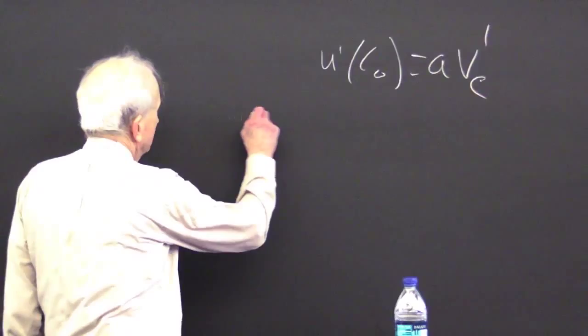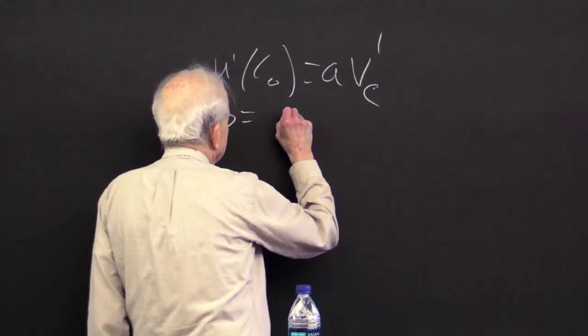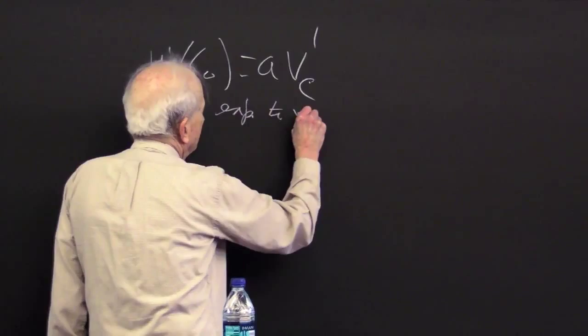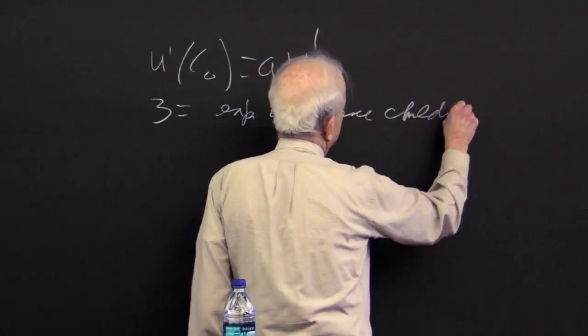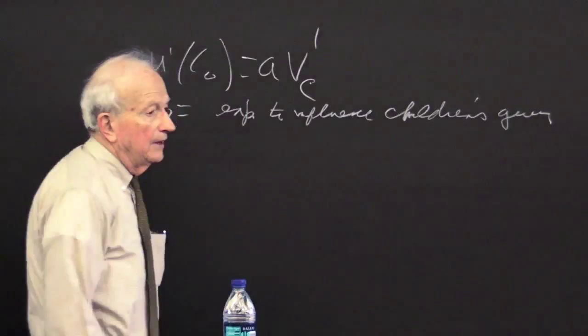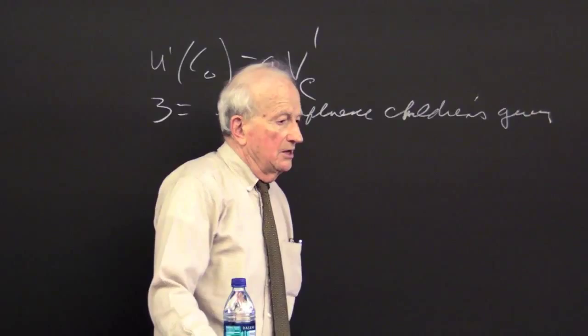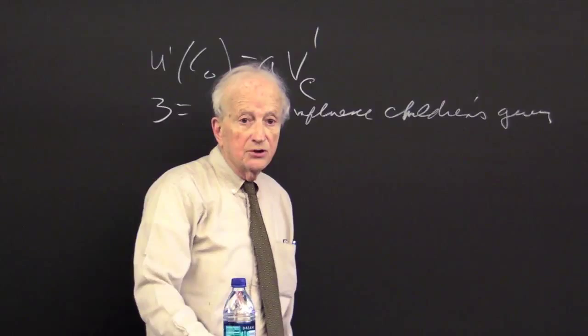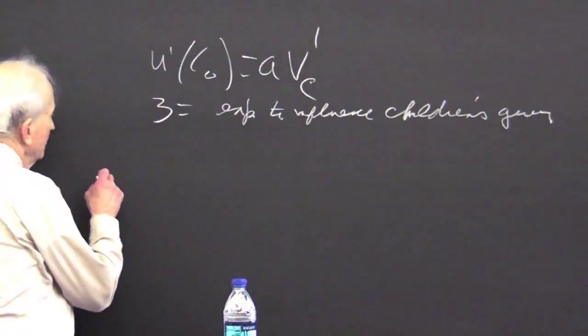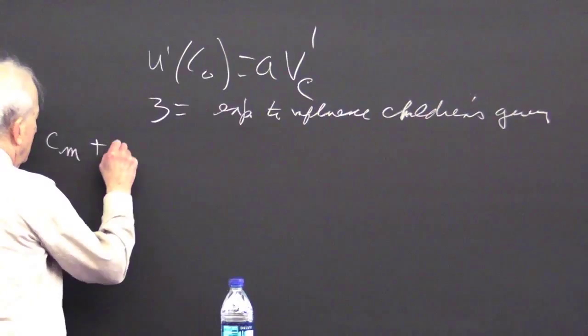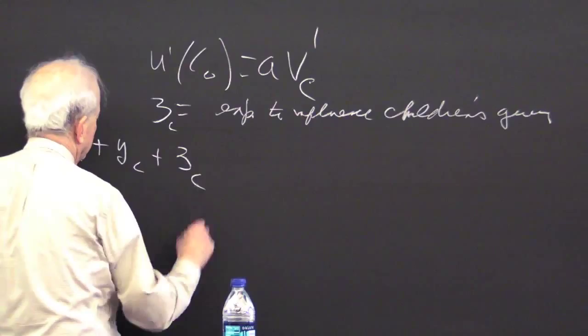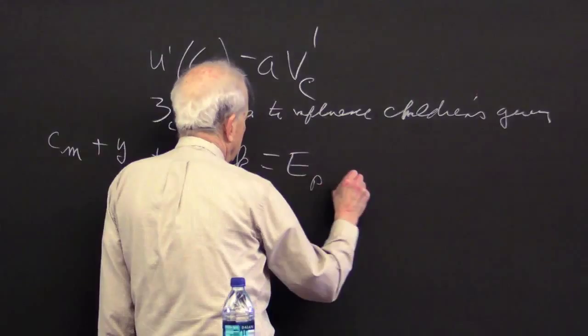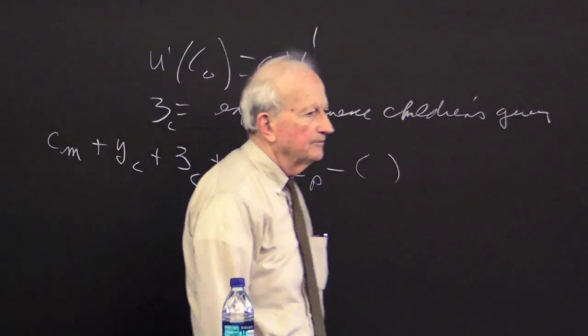I'm going to assume that at middle age, the parents spend the amount Z — expenditures or quantities — to influence children's giving. They do that at middle age, when the parents are middle-aged. So you influence the children when they're young, when they're more malleable, so that you affect what they want to do when they're old.